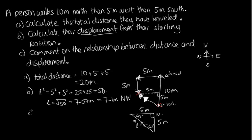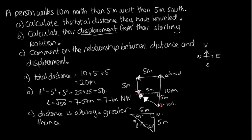Part C: comment on the relationship between distance and displacement. Distance is always greater than or equal to displacement. For example, if a person walked 5 metres north and 5 metres south, they traveled a distance of 10 metres, but their displacement would be 0.